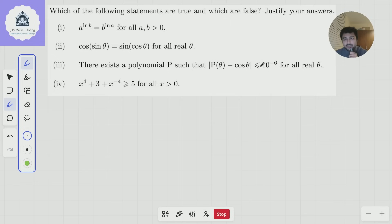Statement 3: there exists a polynomial P such that |P(θ) - cos θ| ≤ 10^(-6) for all real θ.